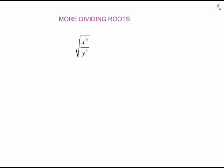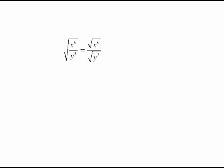This is our second video on dividing square roots. What we're going to move into right now is doing a little bit with variables. If you're going to do the square root of x to the 6 over y cubed, I think it's a good idea to use our property from the previous video and separate this out so that you're just dealing with a top and a bottom separately.